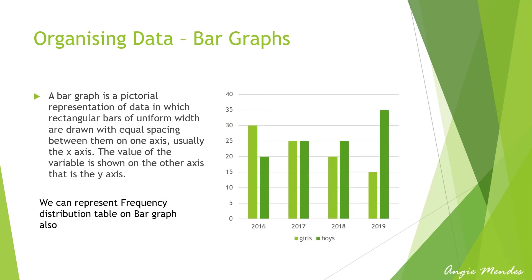Data can also be organized in the form of bar graphs. A bar graph is a pictorial representation of data in which rectangular bars of uniform width are drawn with equal spacing between them on one axis — usually the x-axis — and the value of the variable is shown on the y-axis. When we say bars of uniform width, how broad the bars are needs to be the same, and the space between bars also has to be equal.